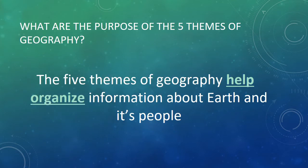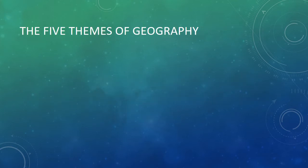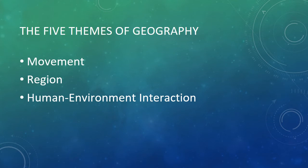The five themes of geography help organize information about earth and its people. The five themes are: Movement, Region, Human-Environment Interaction, Location, and Place.